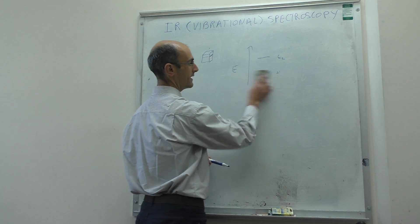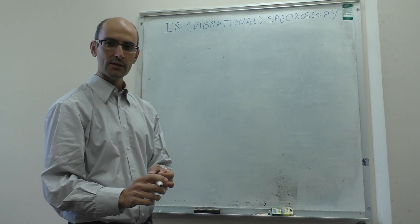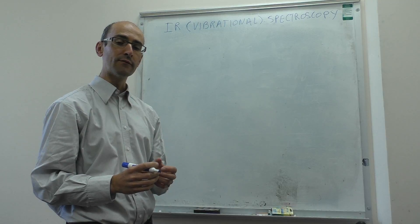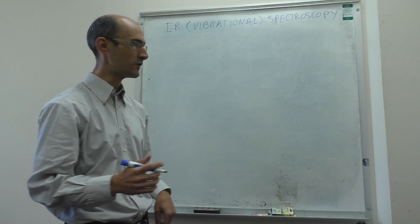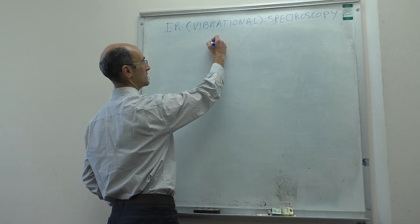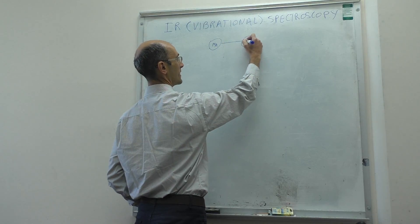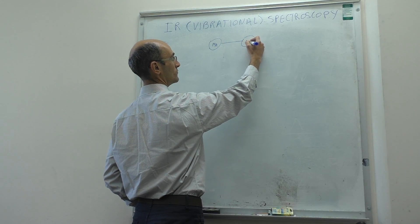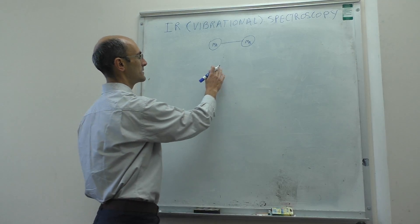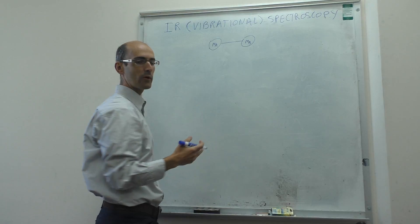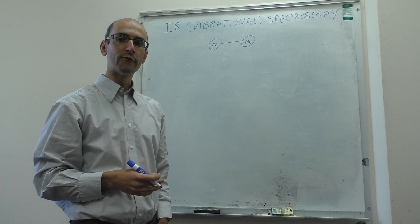Next, we introduce the fundamentals from a theoretical perspective. We're going to talk about infrared spectroscopy for diatomic molecules — molecules with just two atoms. Suppose we have a molecule with atom A connected to atom B. The question is: can we actually predict the infrared spectrum using what we know from quantum mechanics?